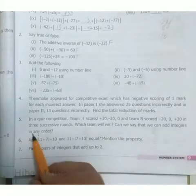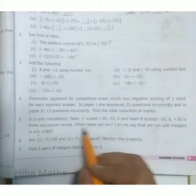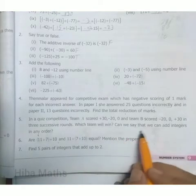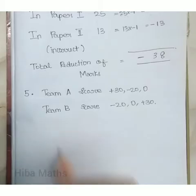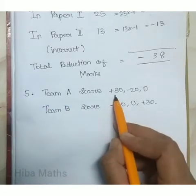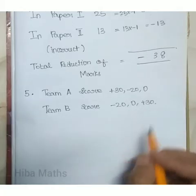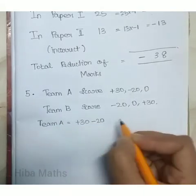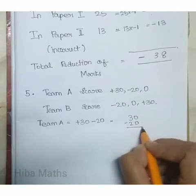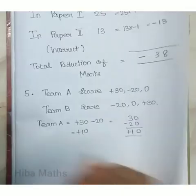Question 5: In a quiz competition, Team A scored plus 30, minus 20, 0 and Team B scored minus 20, 0, plus 30 in three successive rounds.